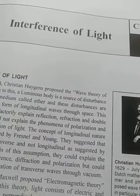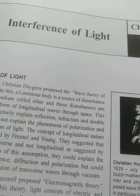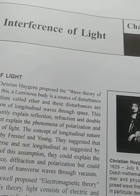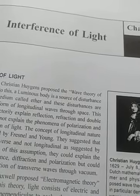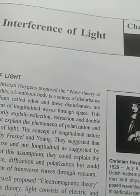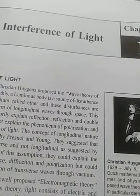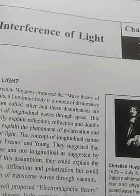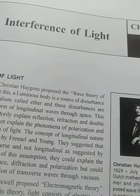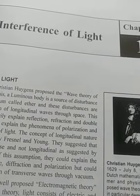This interference can be observed only if light waves are coherent, monochromatic, of same amplitude, and moving in the same direction. And if the light waves are polarized, then the plane of polarization must be same. Due to this interference, we can have points of maximum intensity and minimum intensity.